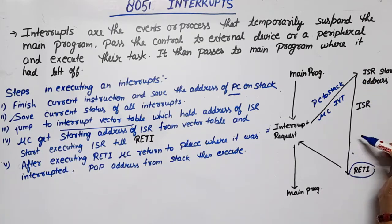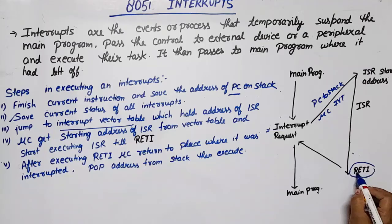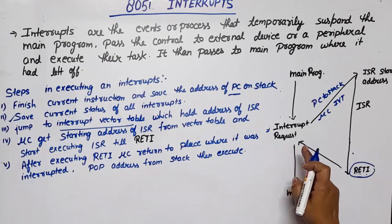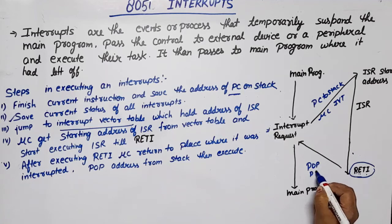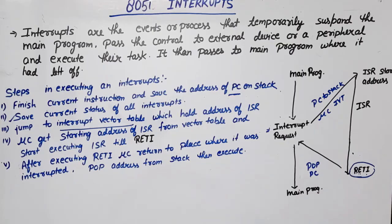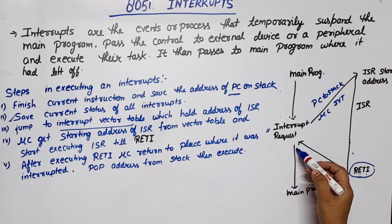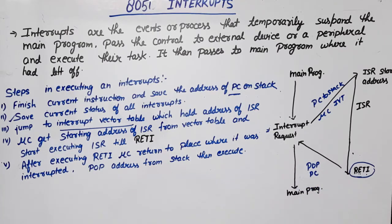When this small task or program executes, the last instruction of the ISR is RETI — Return from Interrupt. After execution of this interrupt service routine, the microcontroller knows where the interruption occurred and it will return to that point. It pops the PC content from the stack, retrieves the address of the next instruction that was saved, and execution of the main program resumes.